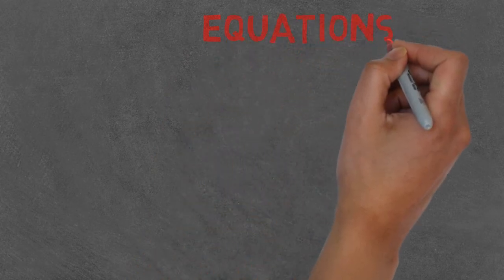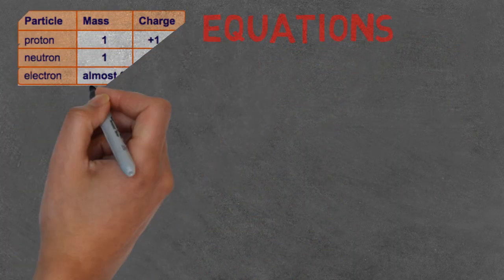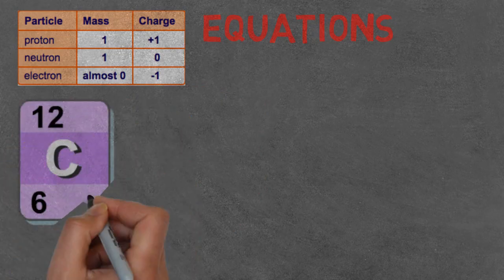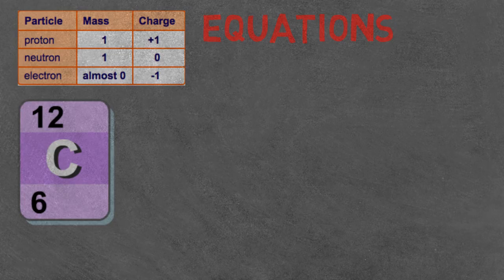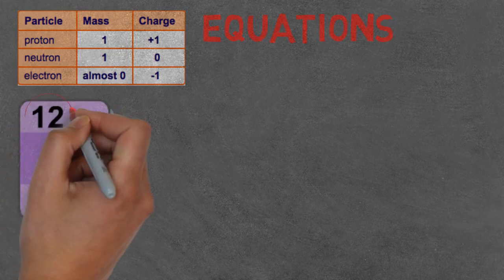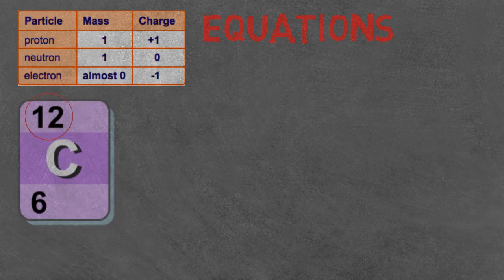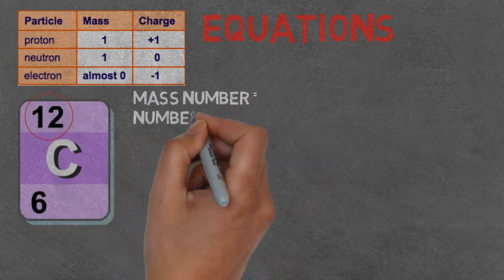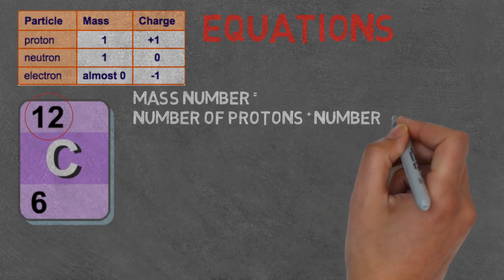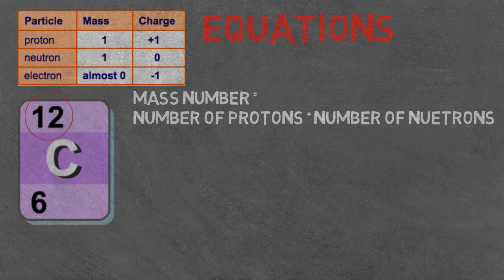Okay, well if we look at some of the equations now, which help us work out both atomic weight and atomic number of an element, again we'll look at carbon as our example. If we want to find the mass number, which is the 12, we need to plus the number of protons and number of neutrons together. So if we had six protons and six neutrons, the weight would be 12.